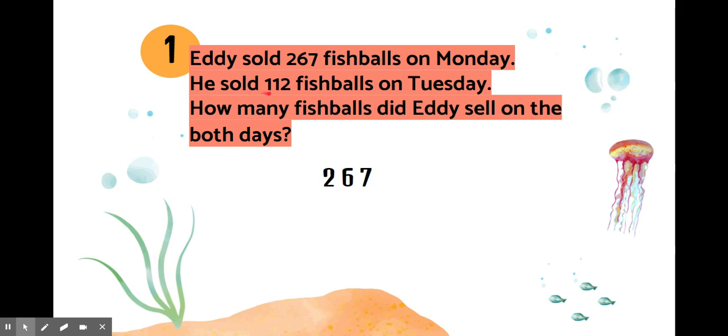So we write 267. Next he sold 112 fish balls on Tuesday. Then we write 112. How many fish balls did Eddie sell on both days? So this is addition. We write addition here.